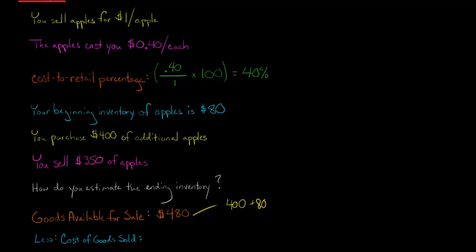So there was $480 worth that was available during the period, but now we need to subtract out the cost of goods sold. So we need to think about what was the cost of goods sold, and this is where this cost to retail percentage is going to become important. So we're going to take our sales, so remember our sales was $350, so we sold $350 worth of apples. Now we're going to multiply that by the cost to retail percentage, so we're going to multiply that by 40%, and that tells us that our cost of goods sold was $140.